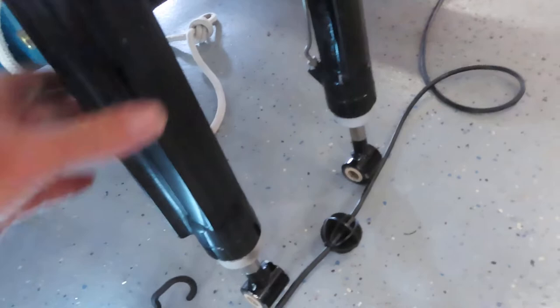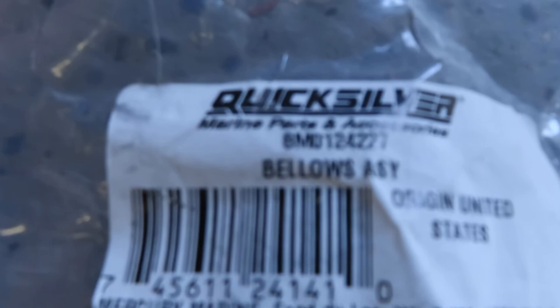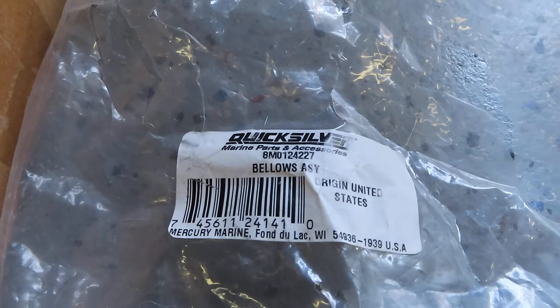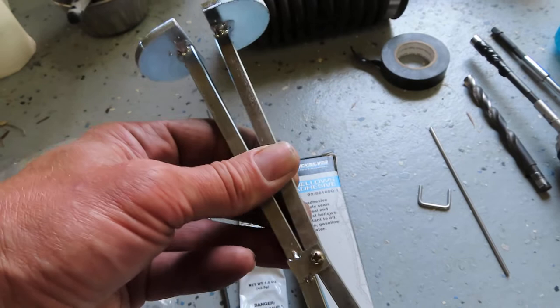Next get yourself some brand new bellows. I bought quicksilver bellows. Here's your part number right there. You can even see that. Looks like it's 8M0124227 quicksilver. And while you're at it order yourself this tool right here. This is a bellows installation tool. It's about 30 bucks. It's very awesome to have. I don't know if I could have done it without it. Here's the part number for that. I'll stick my little magnifier on there. See if you can see it.